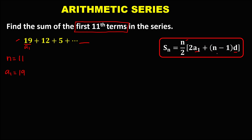And the common difference — to find the common difference using a sub 2 minus a sub 1: a sub 2 is the second term, so we have 12 minus a sub 1 which is 19, so the common difference is negative 7.